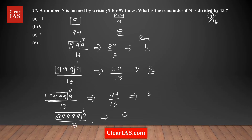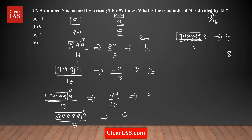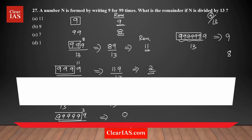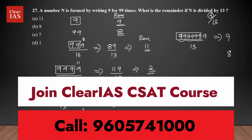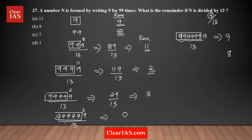It's actually a cycle. For seven 9s, the remainder from six 9s is 0, so we're back to dividing just one 9 — giving remainder 9 again. The cycle repeats: 9, 8, 11, 2, 3, 0 — every 6 nines. So for any multiple of 6 nines (6, 12, 18, 24...), the remainder is 0.